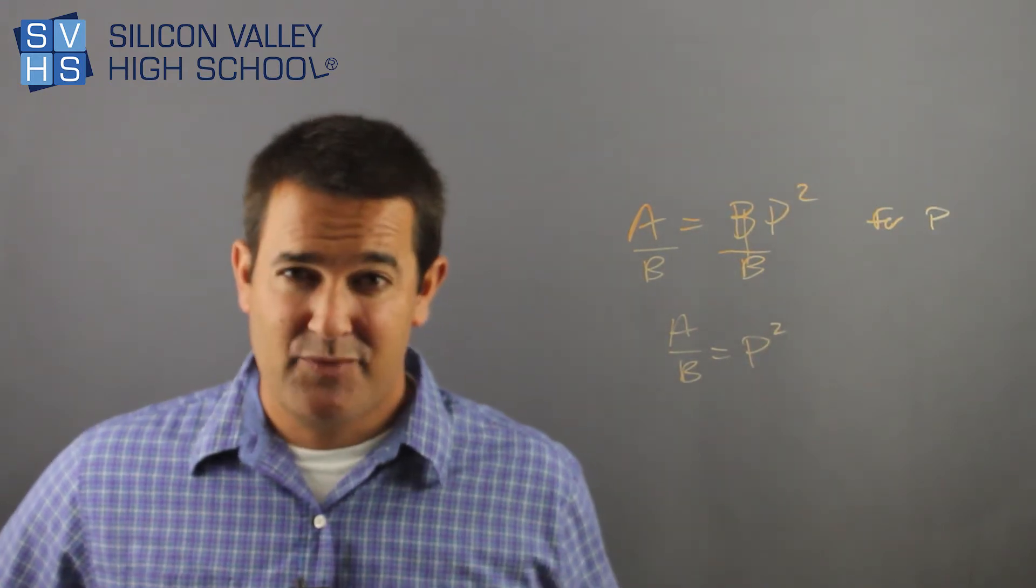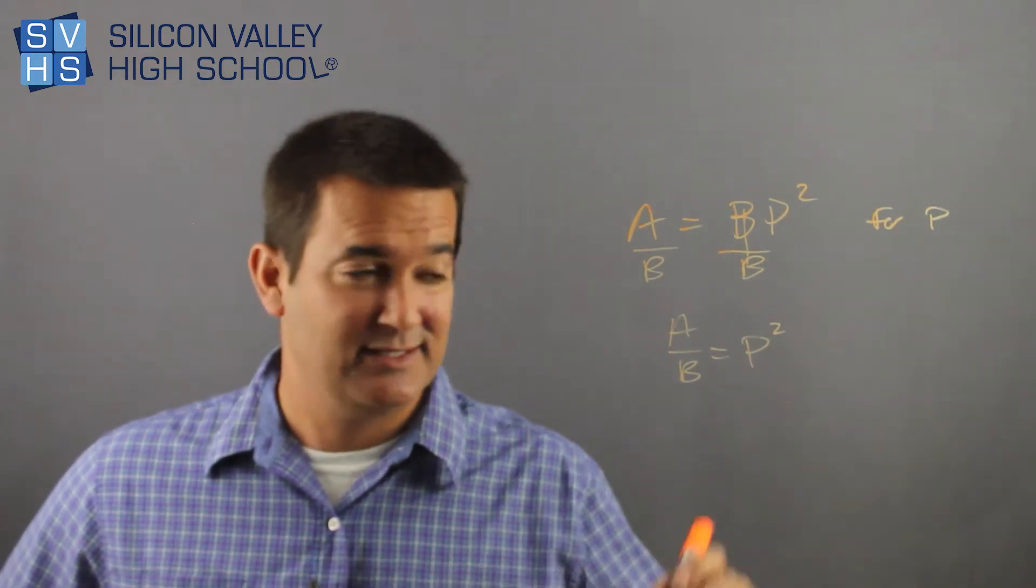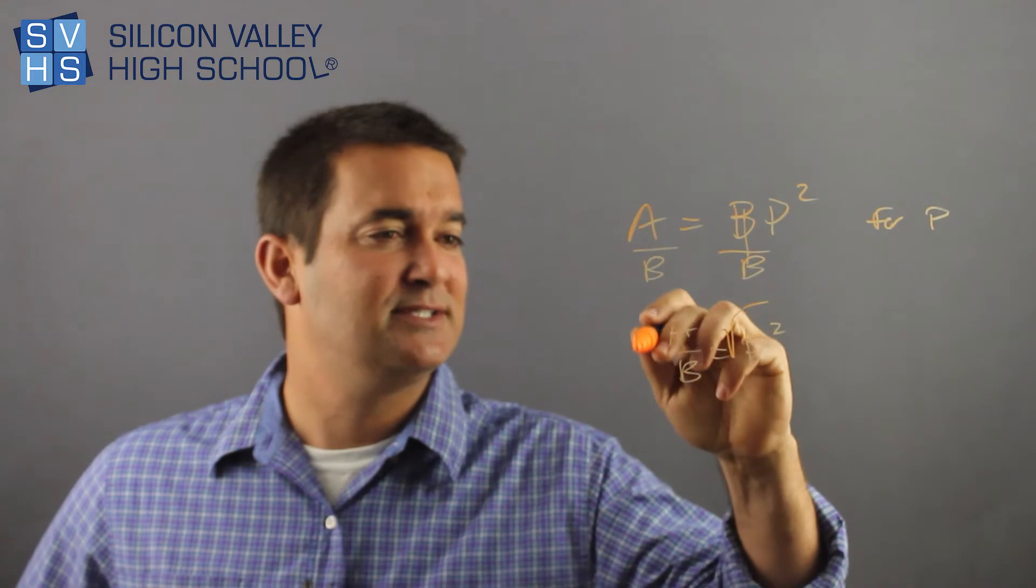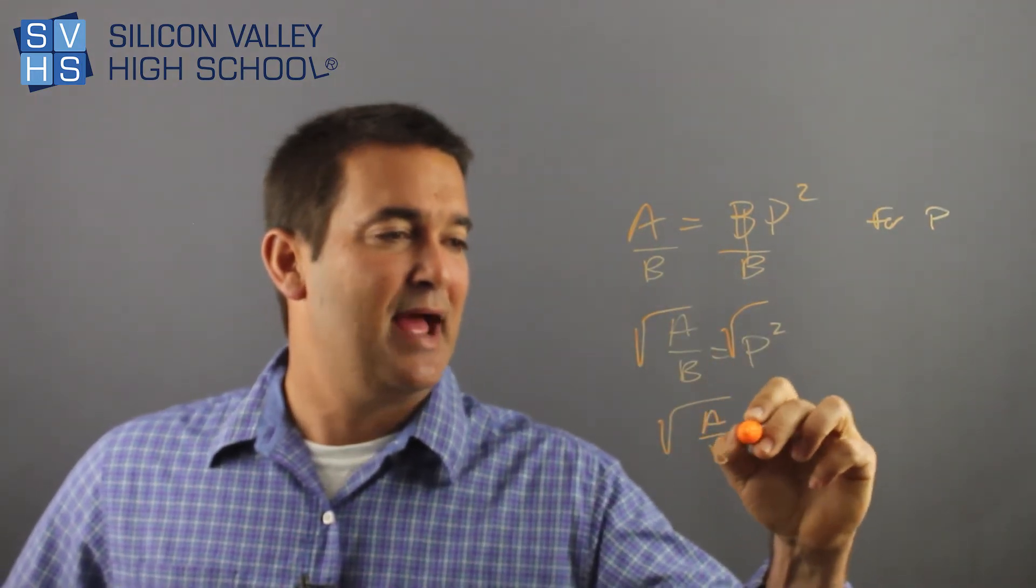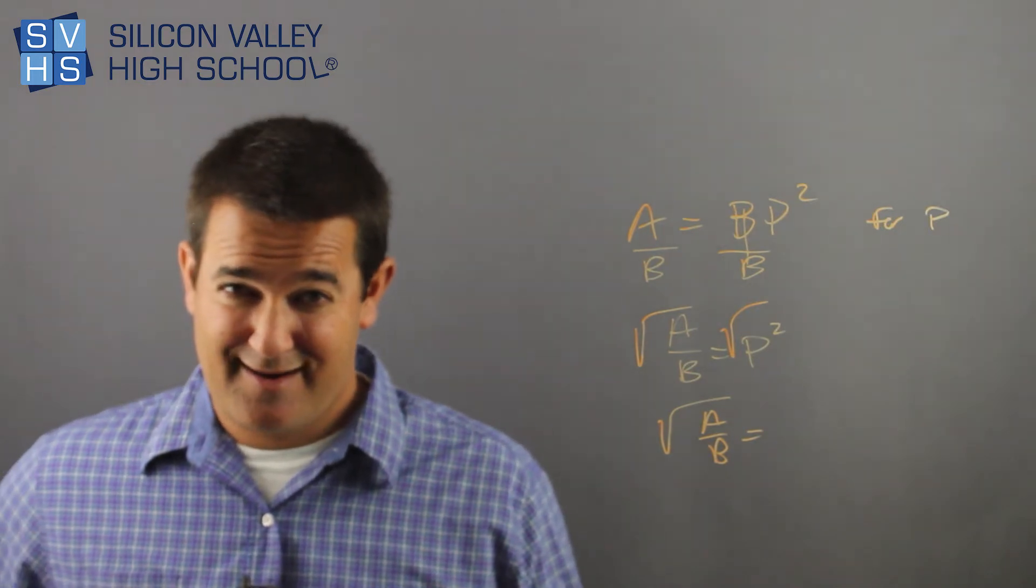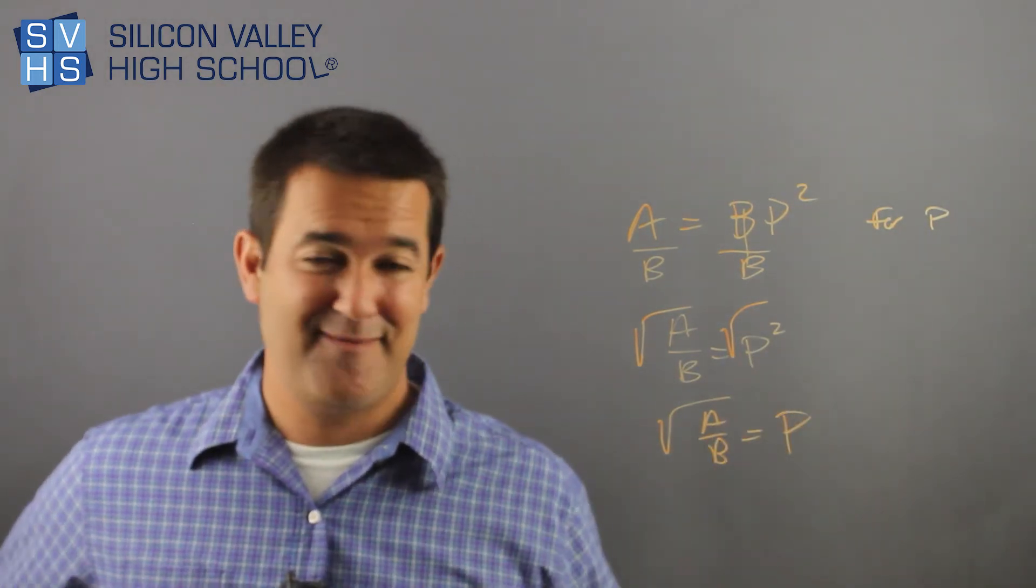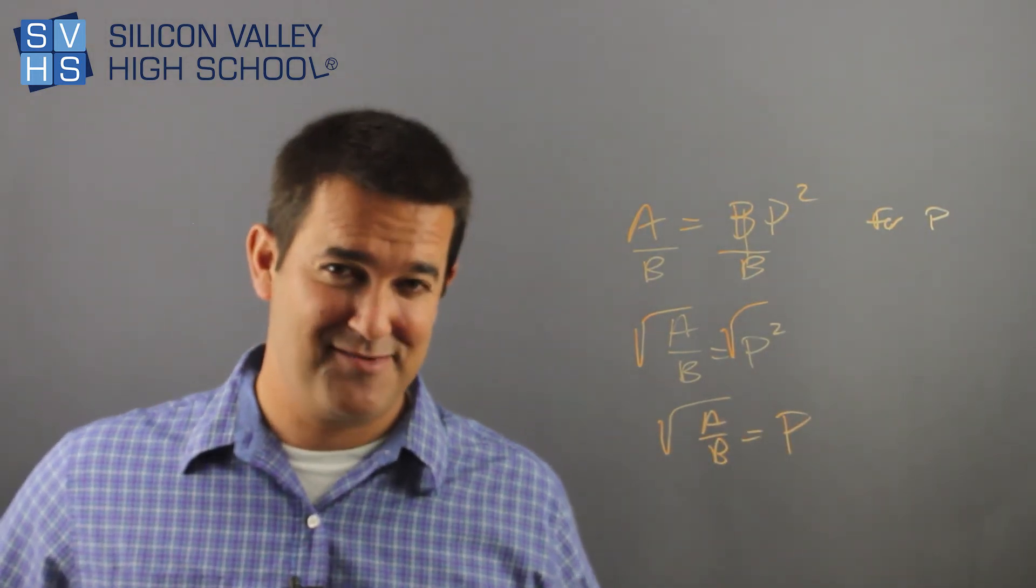What's the opposite of squaring something is actually square rooting it. So I would root both sides. This becomes square root of A over B. And then the square root of P squared is just P. And if you didn't know that, put that on your list of things you now know.